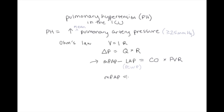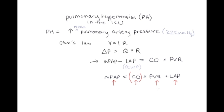Rearranging the equation, mean pulmonary artery pressure equals cardiac output times PVR plus left atrial pressure. So when I'm talking about someone who has an elevation in their mean pulmonary artery pressure, I can identify three different causes: either an elevated cardiac output, an elevated pulmonary vascular resistance, or an elevated left atrial pressure. Pulmonary hypertension due to cardiac output elevations alone is not really a problem I'm concerned about, but patients who have pulmonary hypertension due to an elevated pulmonary vascular resistance — they're going to be the patients I'm most concerned about.